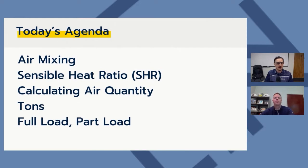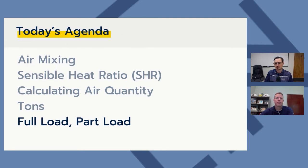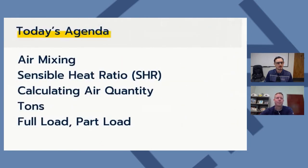Today's agenda has five short sections: air mixing, sensible heat ratio, calculating air quantity and CFM, tons of refrigeration, and a few slides on full load versus part load. Then Andy is going to demonstrate a free psychrometric software program that is available to you.